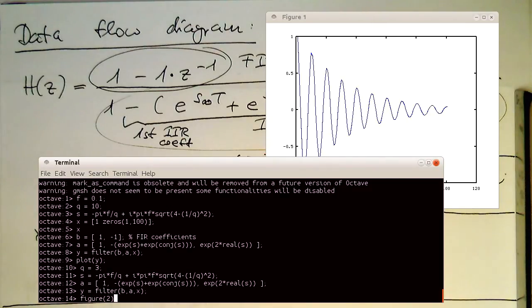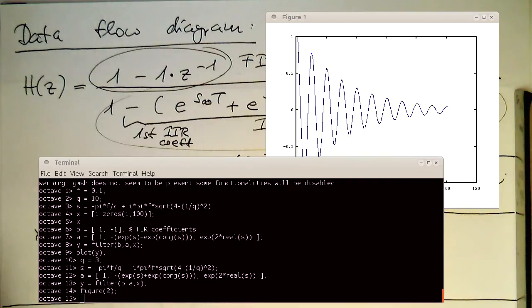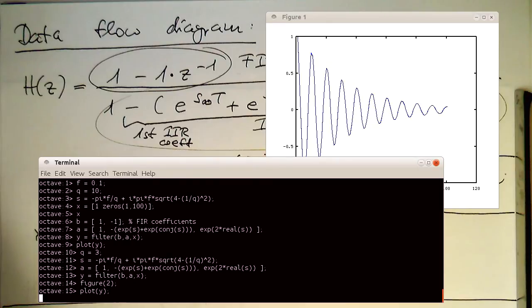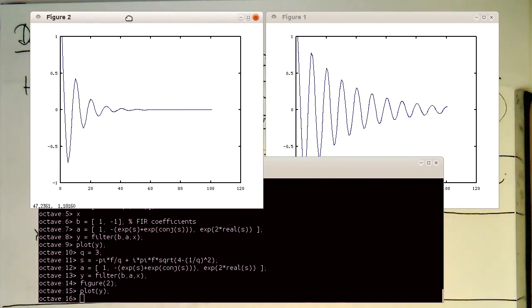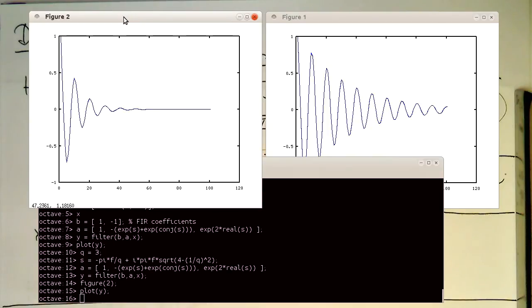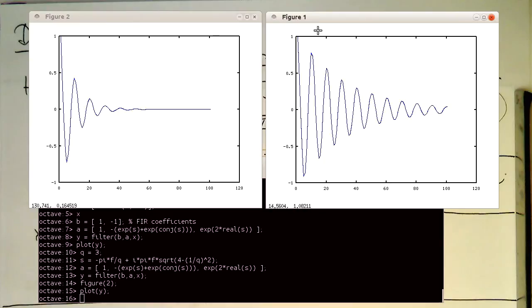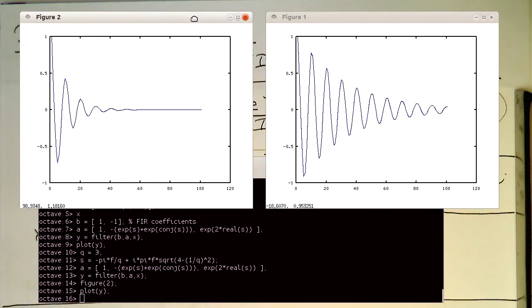So let's do a figure 2 for this and plot this. So then we see with a Q factor of 3, the oscillation decays much quicker than with a Q factor of 10. So with that we have shown that it's pretty straightforward.